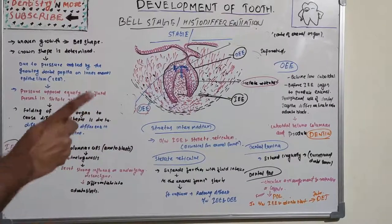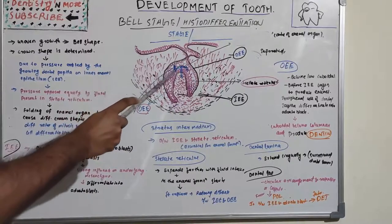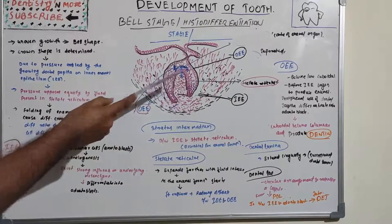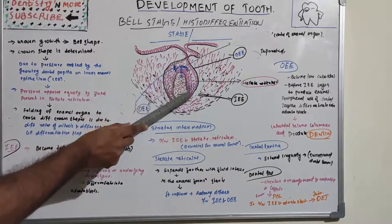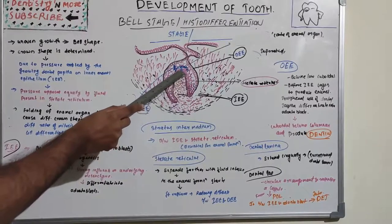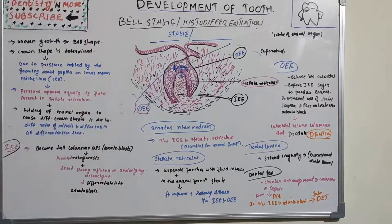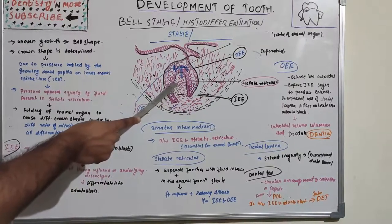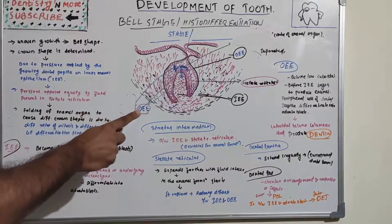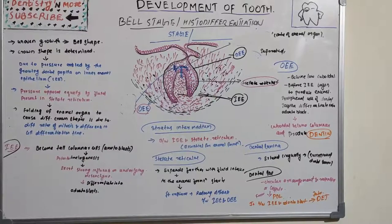The inner enamel epithelium consists of a single layer of cells that differentiate prior to amelogenesis into tall columnar cells called ameloblasts, which later give rise to enamel. These elongated cells are attached to one another by junctional complexes laterally and to stratum intermedium cells by desmosomes. The inner enamel epithelium exerts a strong influence on the underlying dental papilla mesenchyme, inducing it to differentiate into odontoblasts.